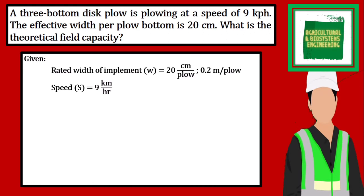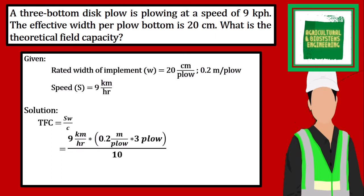The given in the problem are the width of 20 centimeters per plow, or 0.2 meters per plow, and the speed of 9 kilometers per hour. Now we proceed with the solution. Theoretical field capacity is equal to the speed of 9 kilometers per hour. Since we have 3 plows used as implement, we multiply 0.2 meters per plow by 3 plows to get the total width, then divide by the constant of 10. We simply solve, giving us an answer of 0.54 hectare per hour. That is now the solution to problem number 3.